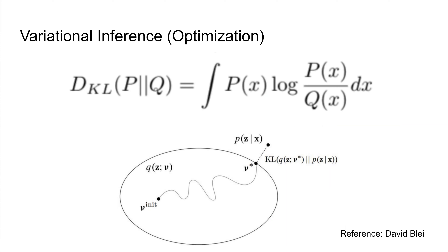We now present the second method of parameter estimation for LDA: variational inference. Variational inference estimates the model parameters through optimization, while Gibbs sampling estimates them through Markov chain Monte Carlo. In estimating model parameters, we are really trying to estimate the posterior distribution of the data — that is, the distribution of latent variables, which consists of the topic distribution for each document, the vocabulary distribution for each topic, and the topic assignment for each word, based on the observed corpus.